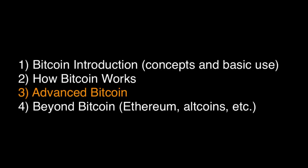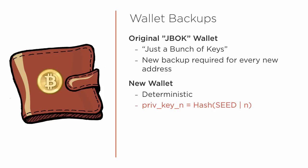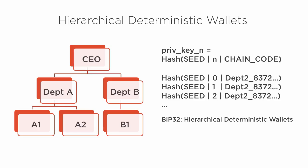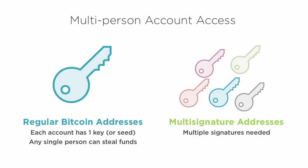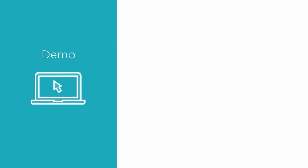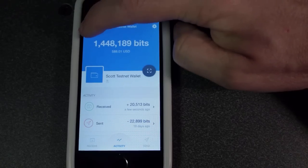The third module goes over the latest and upcoming features in Bitcoin, starting with HD wallets, or hierarchical deterministic wallets, and how they make it possible to back up a wallet with 12 words, which if you memorize gives you a brain wallet. It then covers multi-signature addresses that require two of three people to spend funds, including real demos using the Copay wallet.